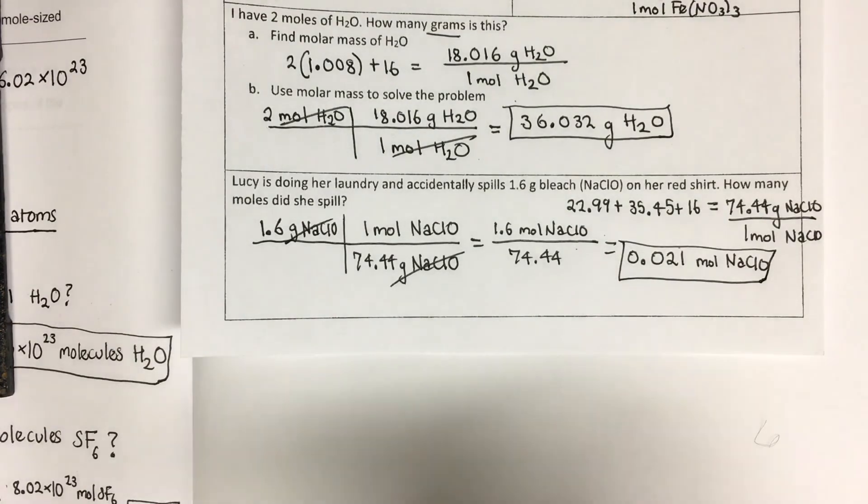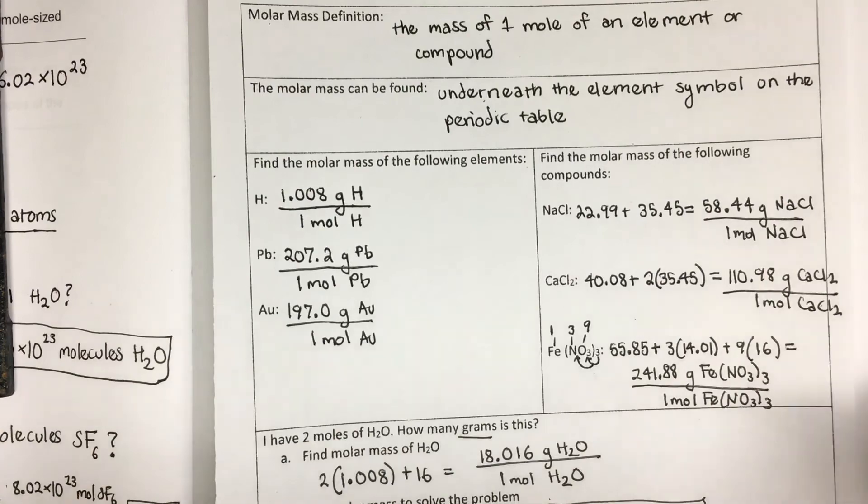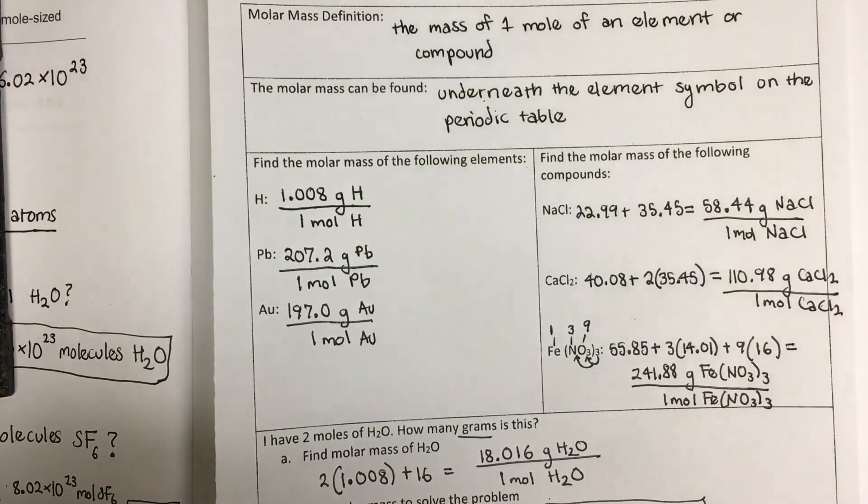It was a really brief introduction to molar mass. How do you find it? How do you use it as a conversion factor? Hopefully that made sense. Let me know if you have any questions at all. I'm happy to answer them.